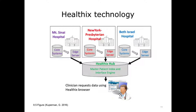HealtheX uses two technologies to enable health information exchange. One is the Master Patient Index — a solution to the patient matching problem. Since there is no consistent identifier across the multiple HealtheX members, each member contributes its registration file to HealtheX. HealtheX can then look across these registration files and, using data elements such as the patient's name, date of birth, and address, identify with high probability who is likely to be the same patient across facilities. The other technology is used to actually retrieve the data — each participant places data from its core system on an edge server, accessible to the HealtheX interface engine.